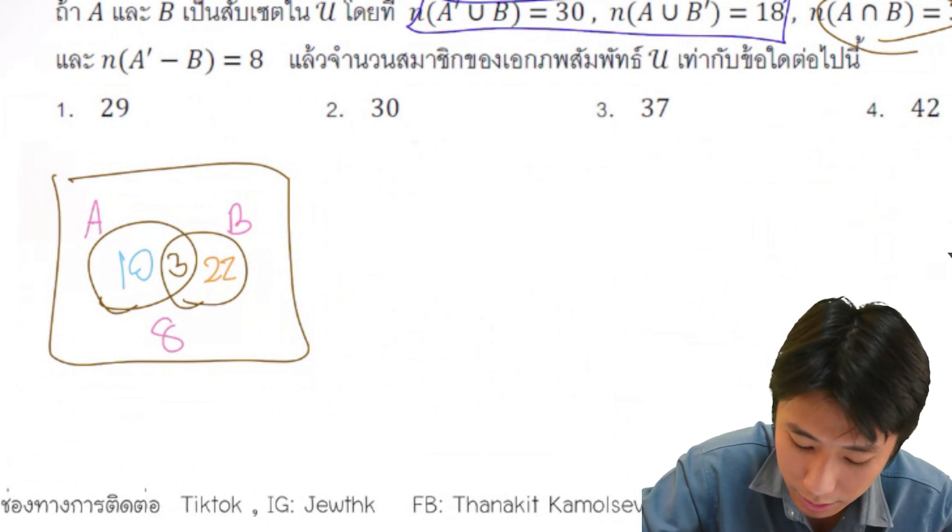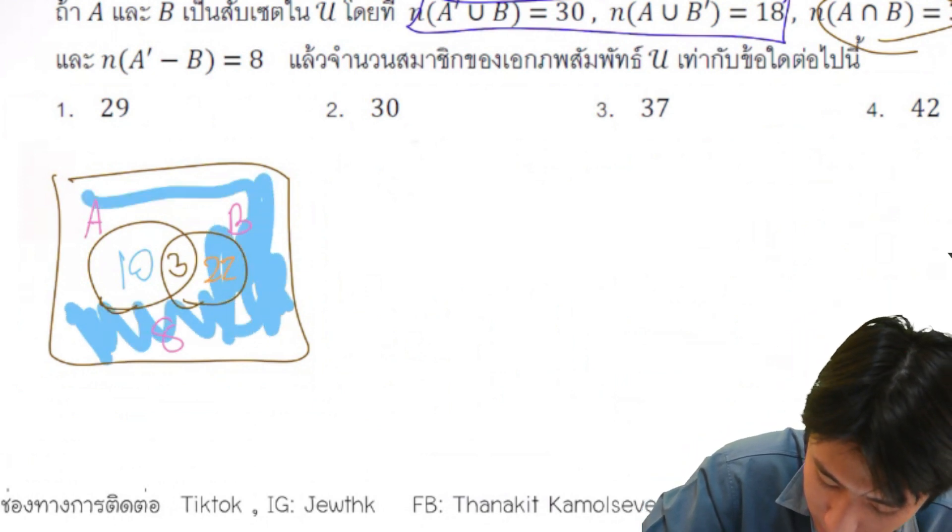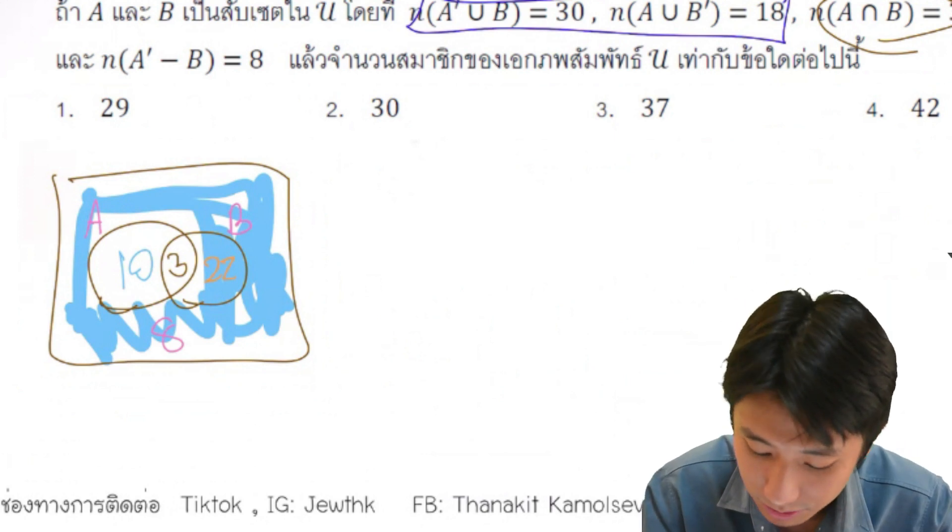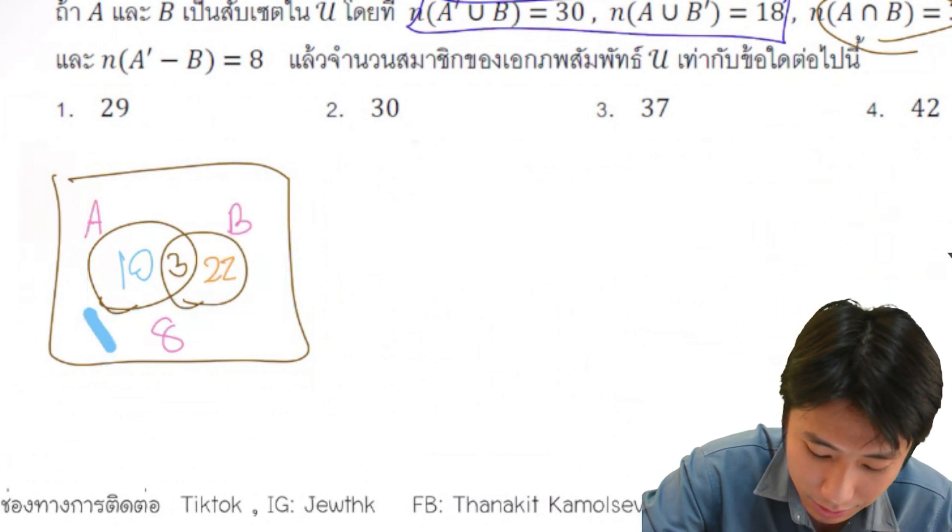So here is the number in A, B is the number here. The number here is 30, which is given as 30. But I remember the number is 10.